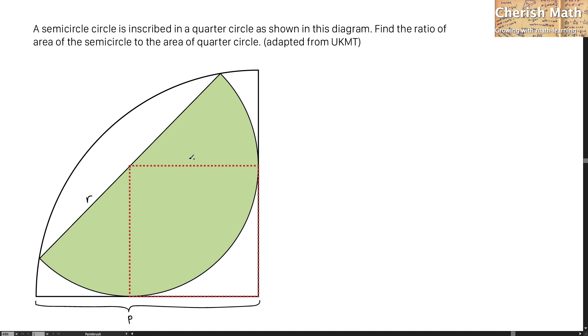The reason why this is a square is because this line is the radius of the semicircle, while this vertical line is the same as the radius.